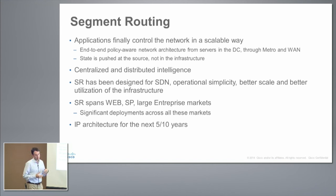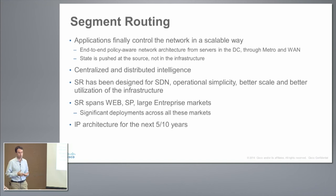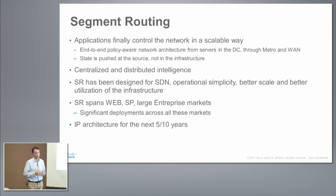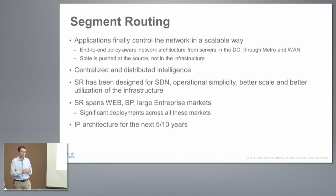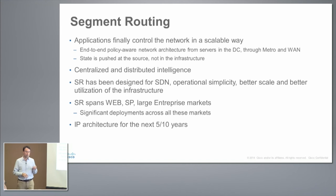Segment routing is, I think, applications finally controlling the network in a scalable way. What we have done with segment routing is deliver an end-to-end multi-domain policy-aware network architecture that goes from servers in the data center through metro and through the WAN. Everything we say here we can demonstrate with actual designs already deployed or committed for deployment. The key point is that the state is pushed at the source and in the packet header, not in the infrastructure — that's how we get the scaling.